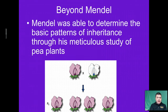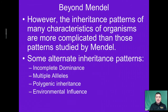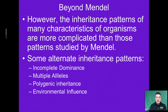When Mendel studied pea plants, he was able to determine the basic patterns of inheritance through meticulous study, but in reality, inheritance patterns go way beyond what Mendel could ever have observed by just studying pea plants. Life is perhaps a little more complex than simple pea plants. There are many different alternate patterns of inheritance that we've discovered since then. Some include incomplete dominance, multiple alleles, polygenic inheritance, and the role that the environment plays in determining genetic traits. Today we're going to take a look at a few of these to get a better understanding of inheritance patterns.